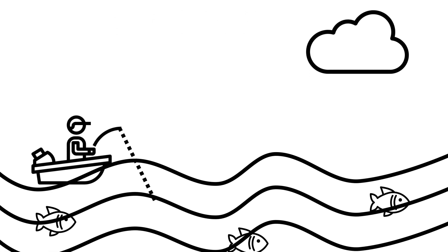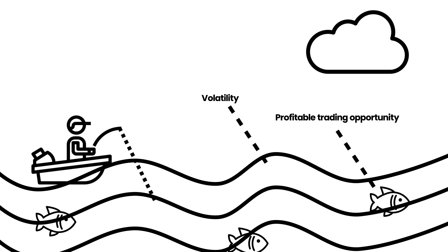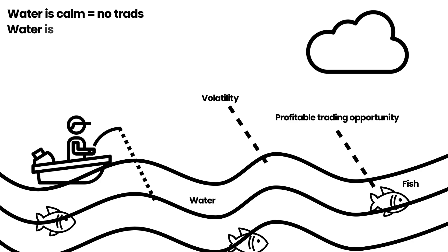In the first part, we will understand the core logic behind the strategy. Think of a fisherman trying to catch fish in a river — the fish represents profitable trading opportunities, and the reverse current represents the volatility of the cryptocurrency market. When the water is calm, there is no movement, and the strategy will wait on the sidelines without executing any trades.